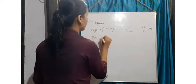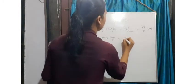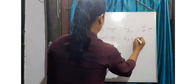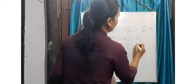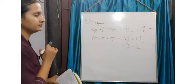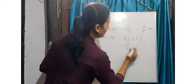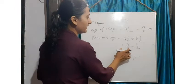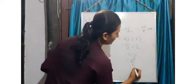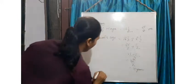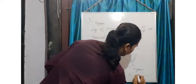So Kamal's age is twelve and a half plus two and a half, that is twenty-five by two plus five by two. We took the LCM, which is two. So twenty-five plus five, that is thirty by two, is equal to fifteen years. Therefore, age of Kamal is fifteen years.